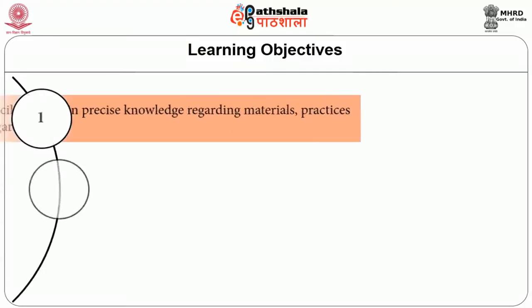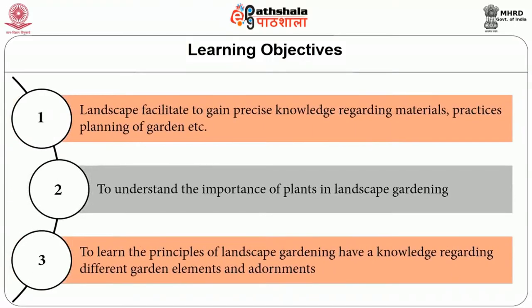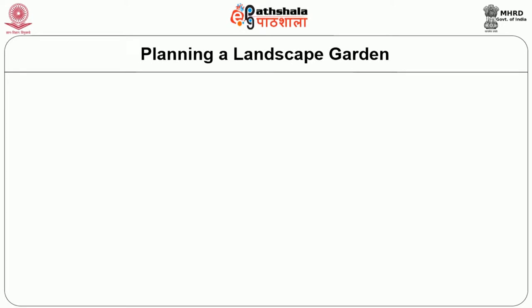Among all of these, landscape garden increases the peace and beauty of the surroundings. Now we will see the objectives of landscape garden. Landscape facilitates gaining precious knowledge regarding materials, practices, and planning of garden. To understand the importance of plants in landscape gardening. The next objective is to learn the principles of landscape gardening. Have knowledge regarding different garden elements and adornments.